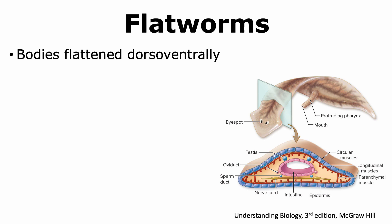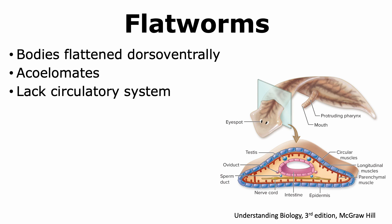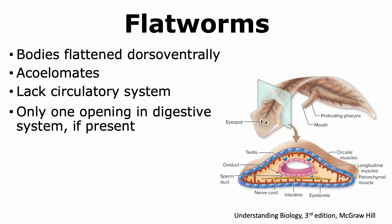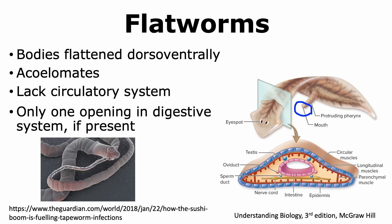Flatworms are named because their bodies are flattened dorsal-ventrally. Flatworms are acoelomates — there is no body cavity between the endoderm and the mesodermal layer. Flatworms do not have a circulatory system and perform gas exchange through their flattened bodies directly. When they do have a digestive system, there is only one opening. Certain flatworms like tapeworms lack a digestive system entirely and absorb nutrients directly through their skin.